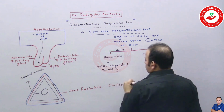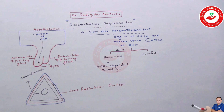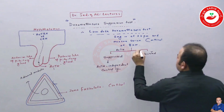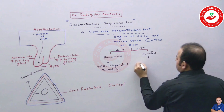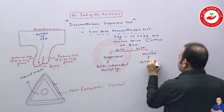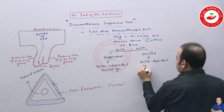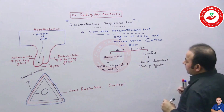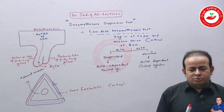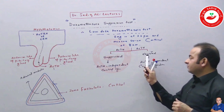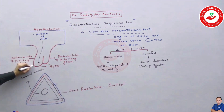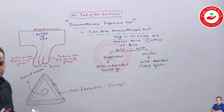If we give low dose dexamethasone and ACTH is not suppressed — it remains elevated — that is called ACTH-dependent Cushing. This means something is wrong in the pituitary, causing it to release more ACTH, and that excess ACTH acts on the zona fasciculata to release more cortisol.